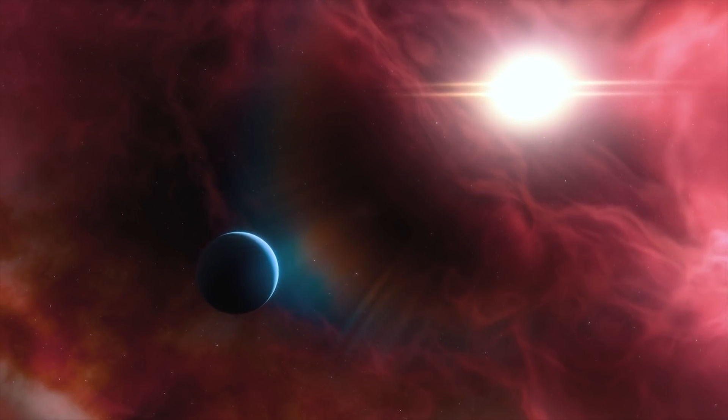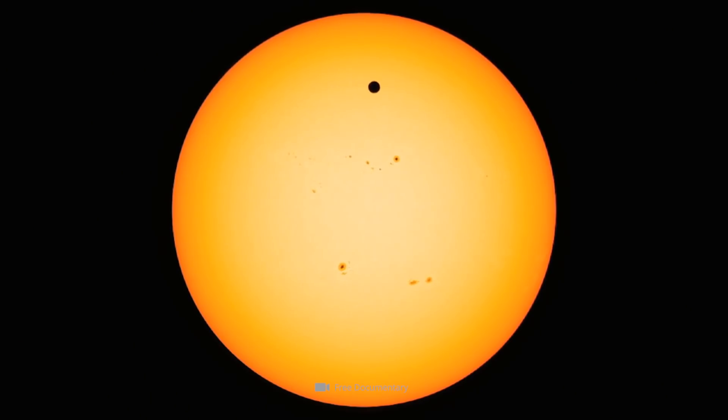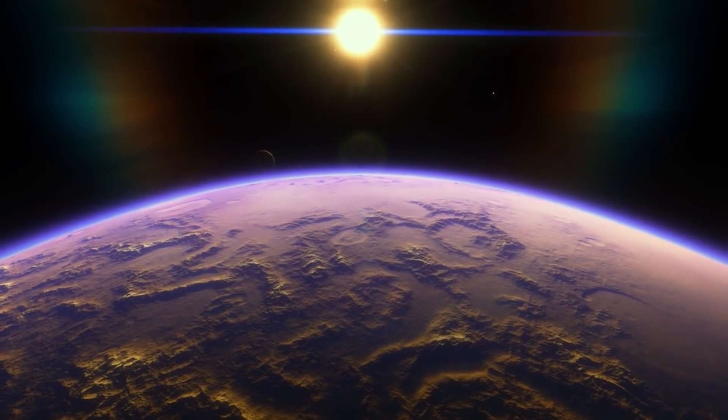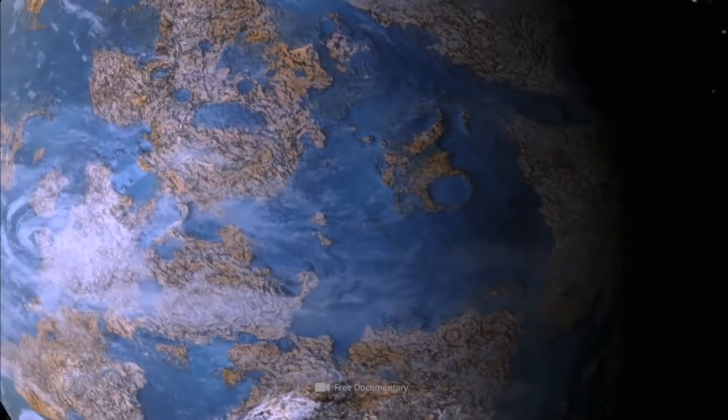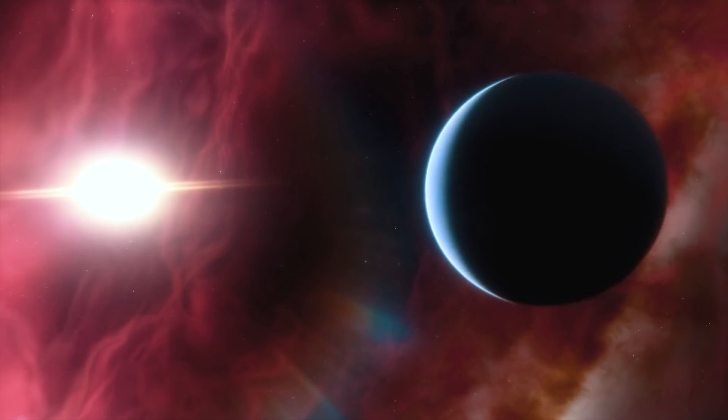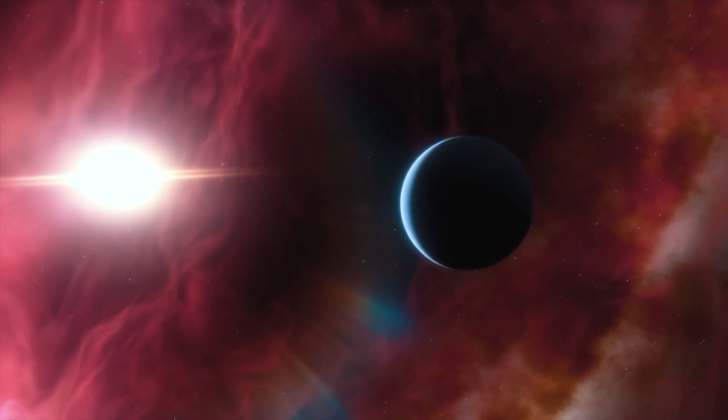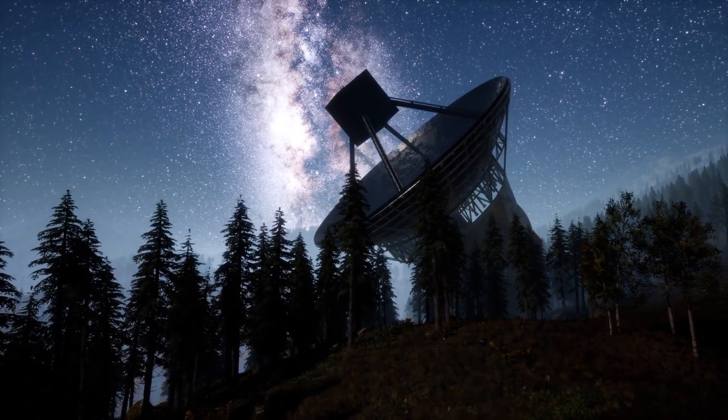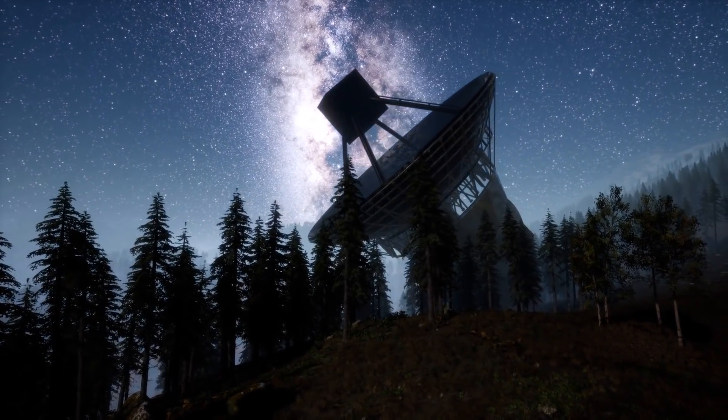Since planets themselves do not emit light, we can only see them when they pass in front of their star as tiny dots. This happens only once every few days, weeks, or years, depending on the planet's orbit. Theoretically, an Earth-like planet in a system with a very large sun can take several Earth years to orbit its star. Therefore, we still cannot be sure to have found all exoplanets within reach of our telescopes so far.